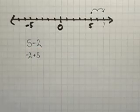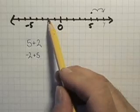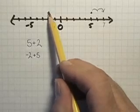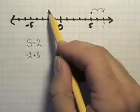Next, let's take negative 2 plus 5. Again, we will use the first number as our starting point, and we will move 5 in the positive direction.